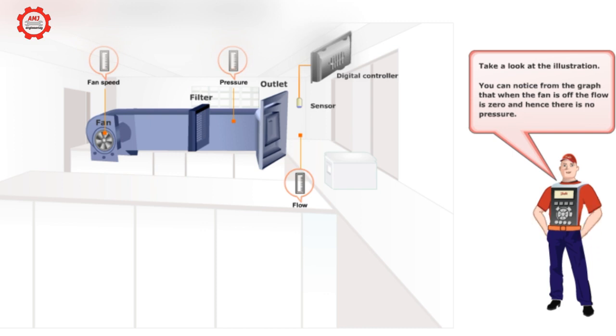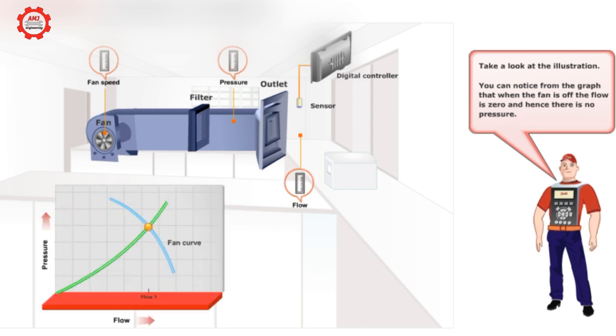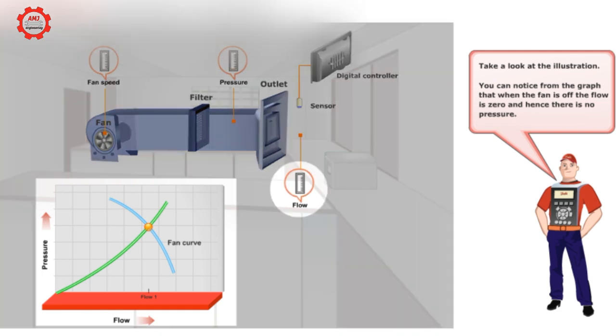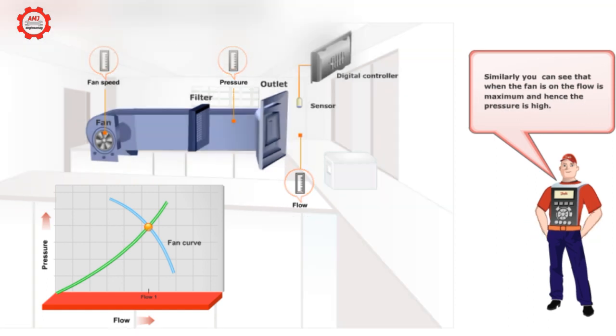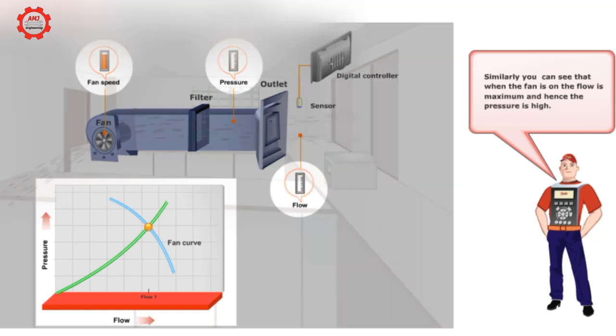Take a look at the illustration. You can notice from the graph that when the fan is off, the flow is zero and hence there is no pressure. Similarly, you can see that when the fan is on, the flow is maximum and hence the pressure is high.